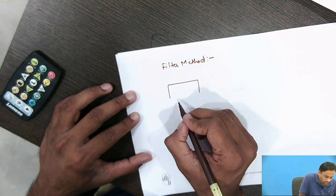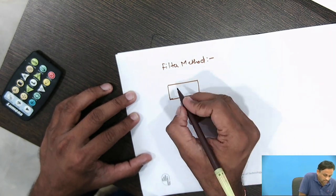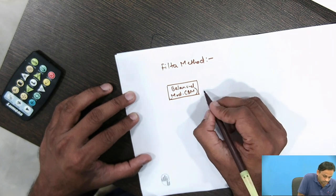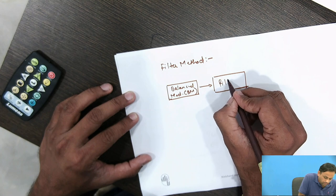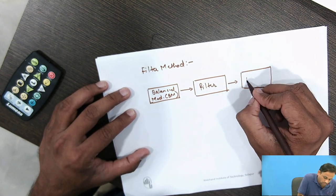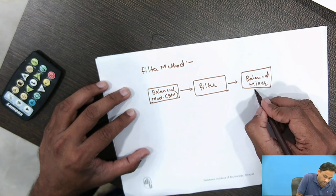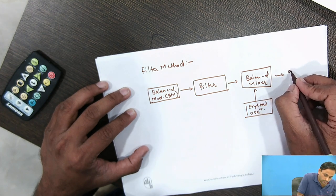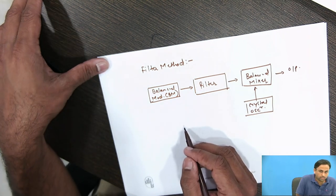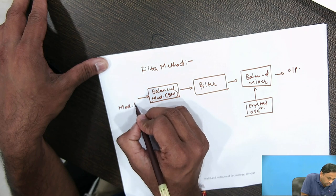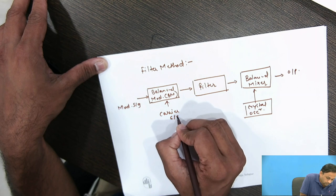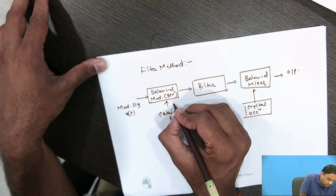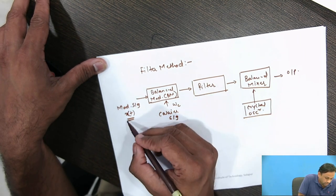The filter method: since SSB requires generating only one sideband, the block diagram starts with a balanced modulator (BM), followed by a filter, then a balanced mixer, and a crystal oscillator at the output. For modulation, we require one modulating signal x(t) and one carrier signal at frequency ωc as inputs.